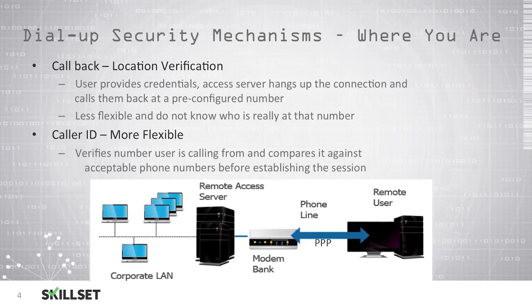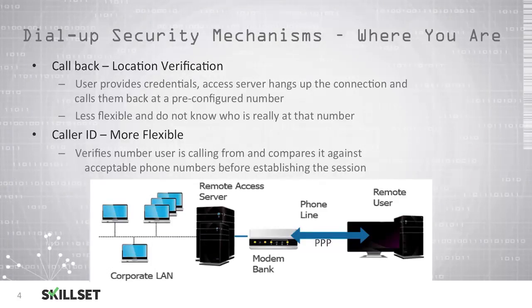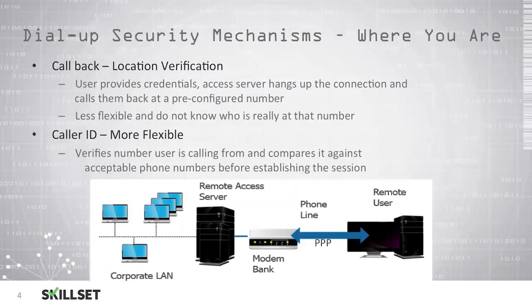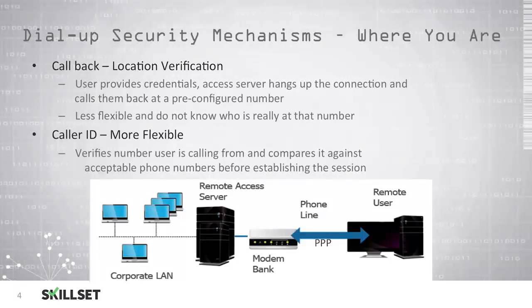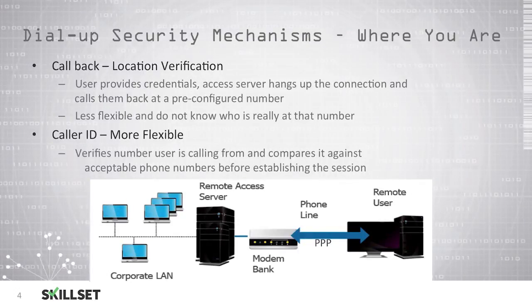You also do not really know who resides at that number. Caller ID service was more flexible — you would provide a list of acceptable numbers, and caller ID verification would be made when the individual dialed in to verify they were on the approved list. The individual would connect using their phone line and Point-to-Point Protocol, and as long as the verification was successful, they would receive access to the corporate LAN.